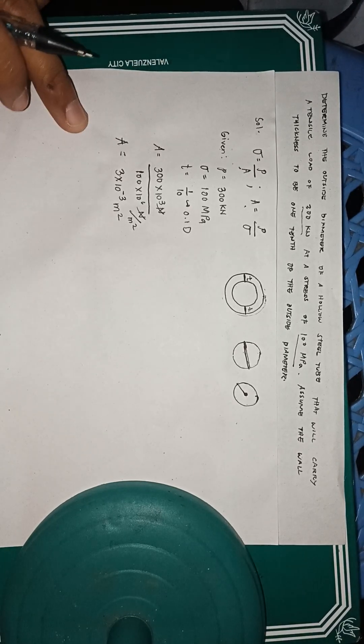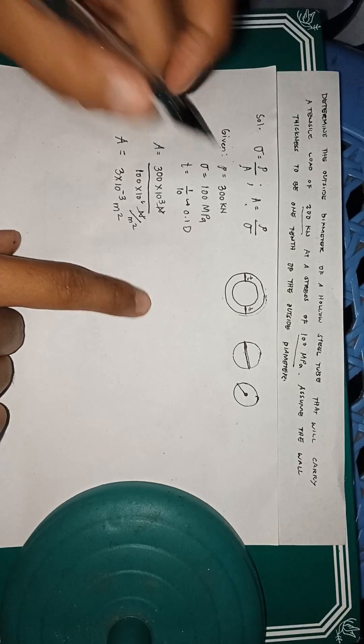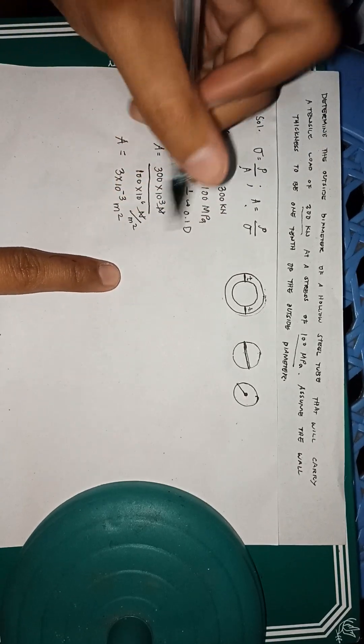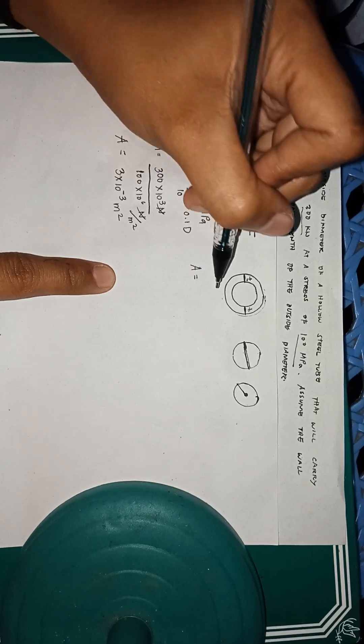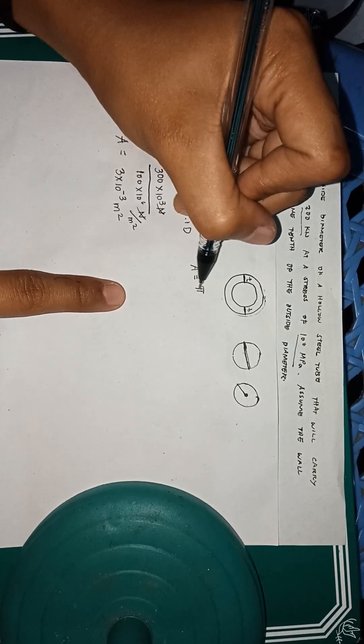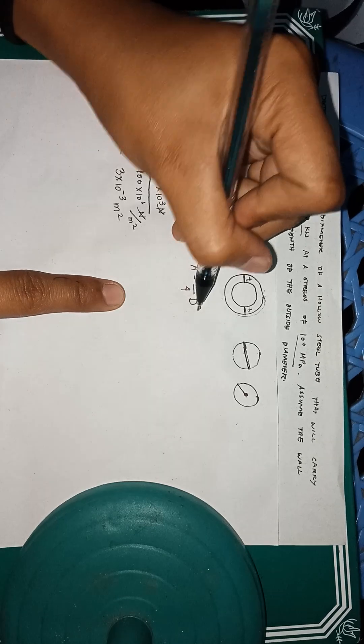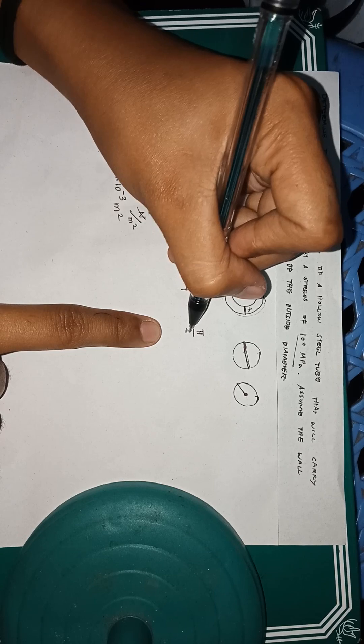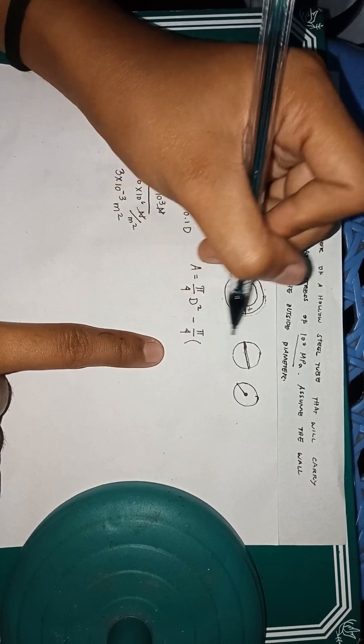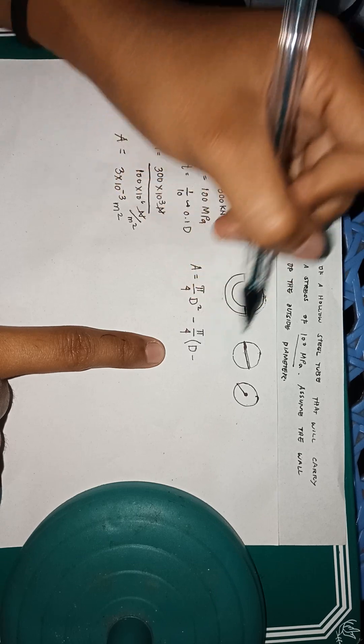Now to calculate the diameter, we will be using this formula. Area is equals to pi over 4 times the diameter, the outside diameter squared, minus pi over 4 times d minus 2t squared.